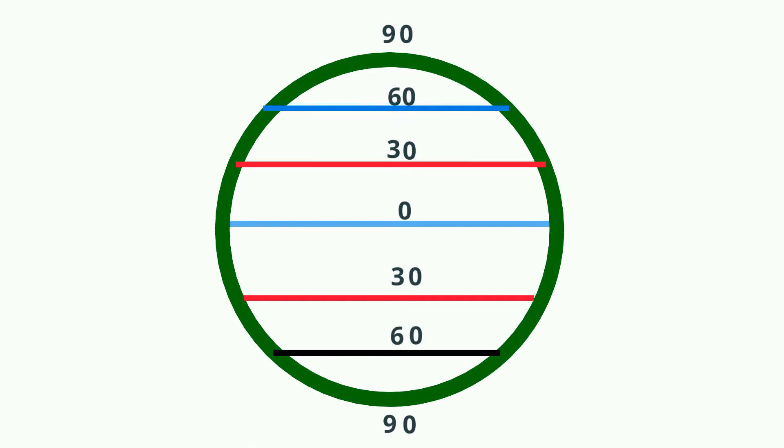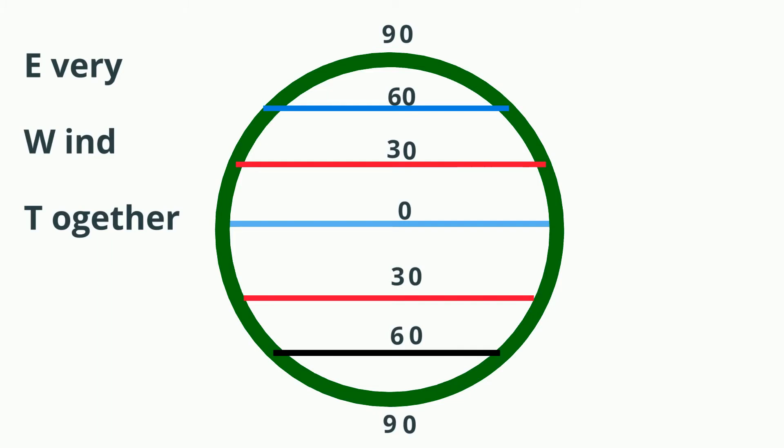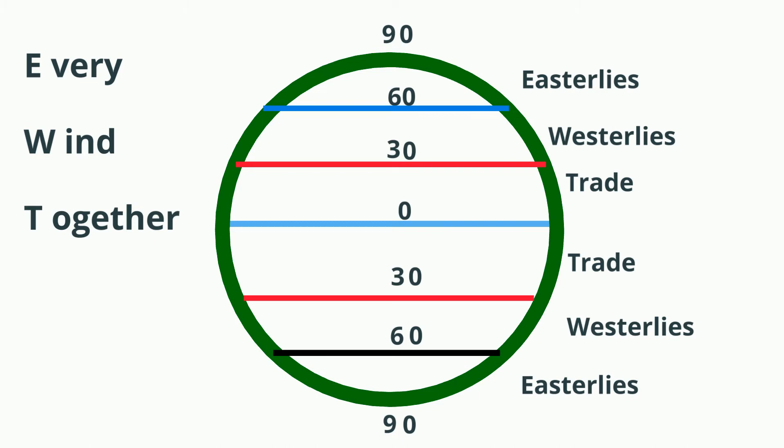Now we have to come up with the names. Remember this, every wind together. That stands for the Easterlies, Westerlies, Trade. There is the northern hemisphere, now let's go for the southern. Start at the very bottom, Easterlies, Westerlies, Trade. Now another name for the trades are the tropical Easterlies.